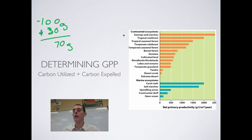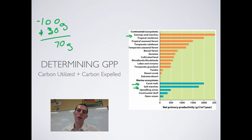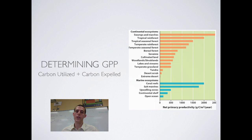Comparing ecosystems, the most productive on the terrestrial side are swamps and marshes followed by rainforests. In the water, the most productive is a coral reef followed by a salt marsh. These places have a lot of water, a lot of sunlight, and good warm temperatures, so they have the highest rates of productivity.